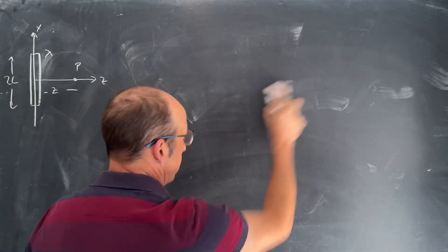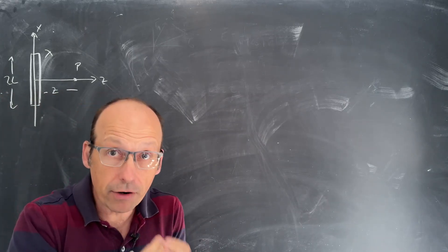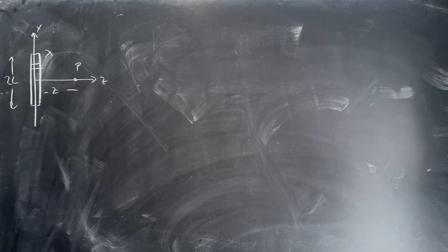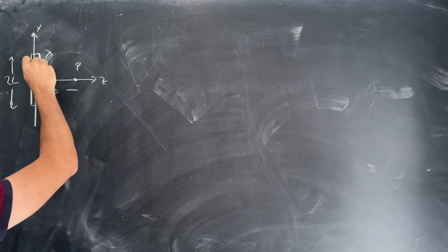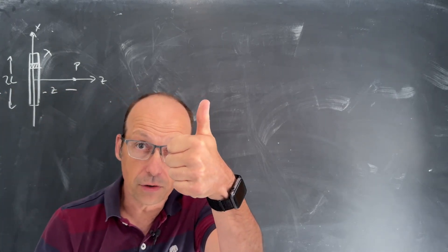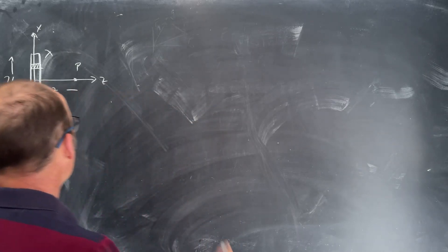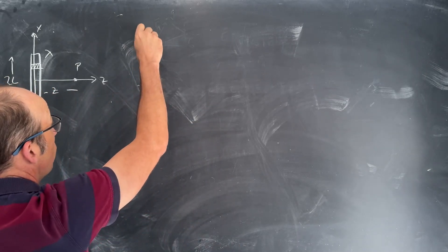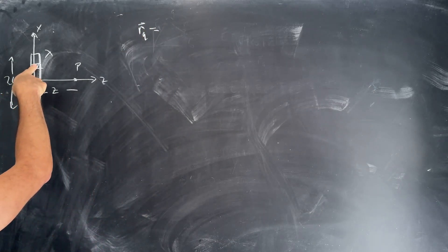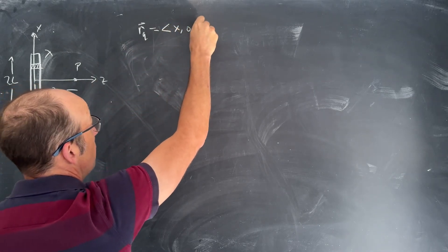That's the key equation. Let's pick a generic charge on our rod. I need to know the location of the observation location and the location of the charge, then find the vector r. I'm going to say rq — the location of that charge. If that's my origin and that's my charge on the x-axis, then this is just going to be the vector x, zero, zero.